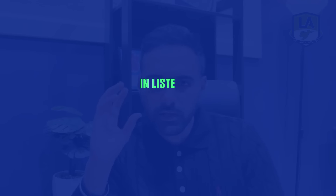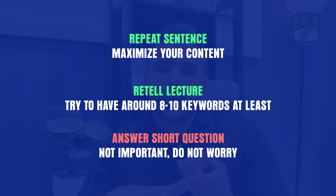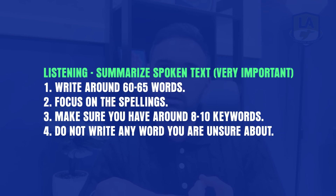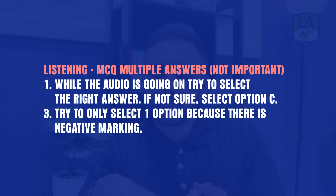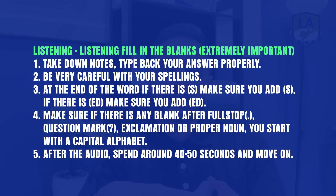To summarize: listening gives you 45 points from listening and almost 45 from speaking. For repeat sentence, maximize your content. For read a lecture, try to have around eight to ten keywords. Don't worry about answer short questions. For summarize spoken text — the first listening task — write around 60 to 65 words, focus on spellings, and make sure you have around eight to ten keywords. For MCQ multiple — not important; listen, try to select the right answer, select only one option as there's negative marking, and move on within five to ten seconds after the audio.